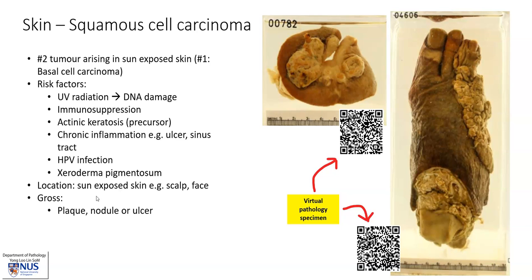The location is usually in sun-exposed skin because of the link with UV radiation, so the face is a rather common site for SCC. This usually occurs in the form of either a flat plaque, a nodule — as you can see here — or an ulcer. You may access these interactive virtual pathology specimens by scanning these QR codes, and these are found in our virtual pathology museum.